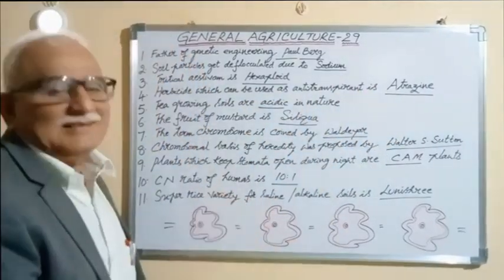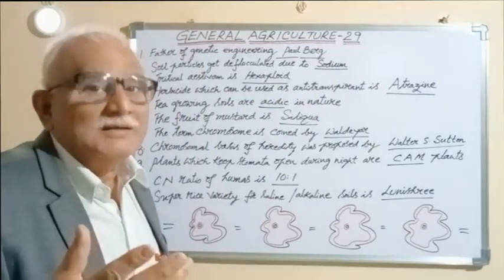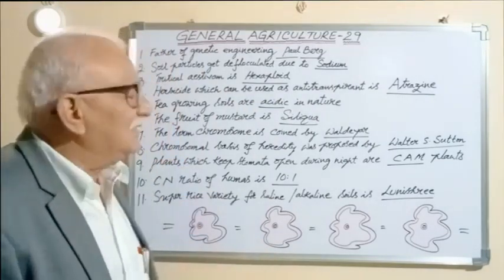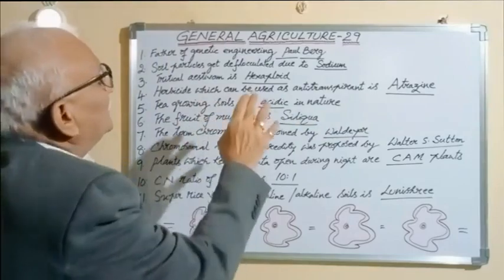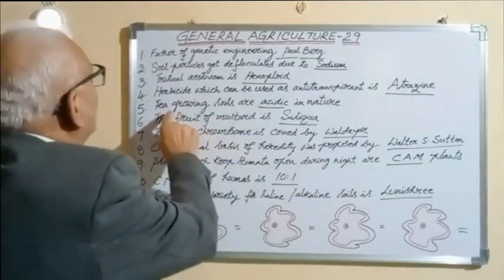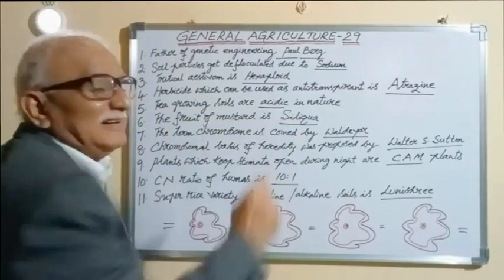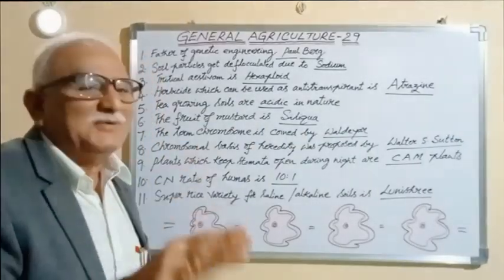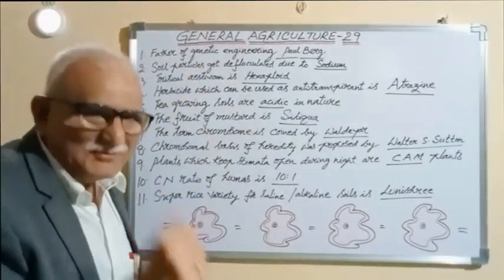Atrazine and simazine are herbicides used for general purposes, but atrazine is also used for anti-transpirant purposes. Tea-growing soils are acidic in nature, and that is why tea grows in high rainfall areas.